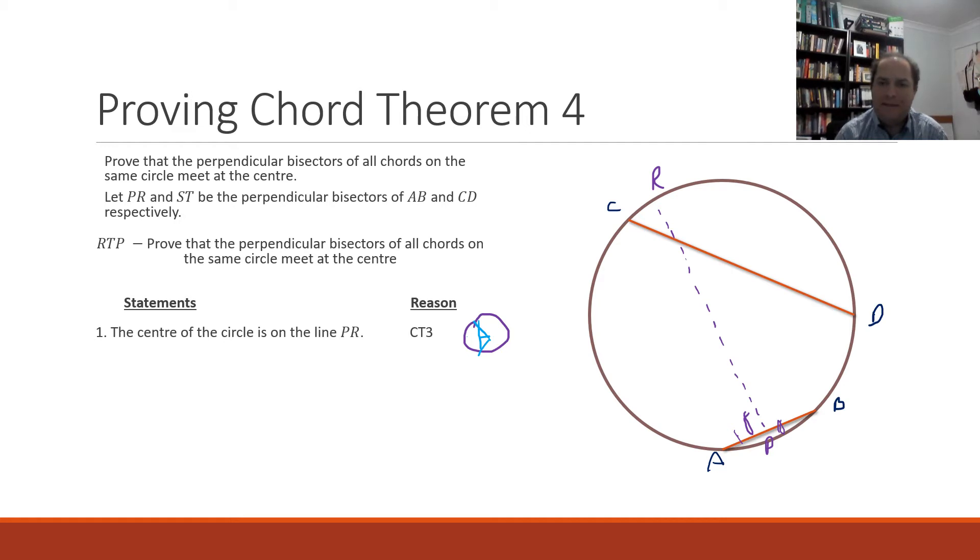So by definition we've created this as a perpendicular bisector. According to chord theorem three that perpendicular bisector should cut through the center and it goes through this point of our circle.